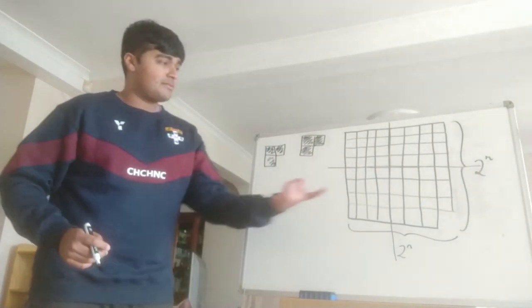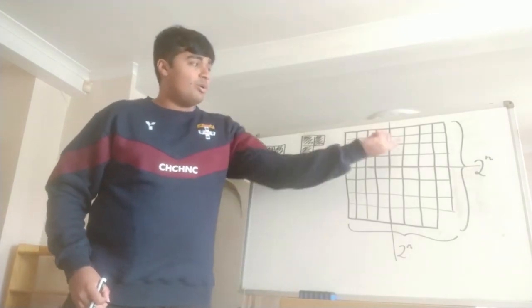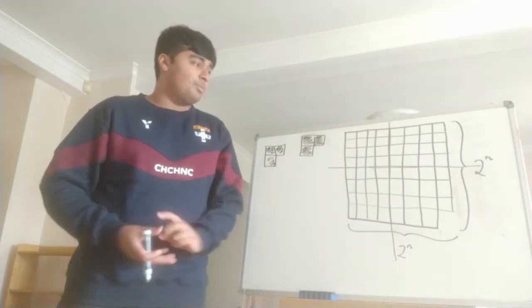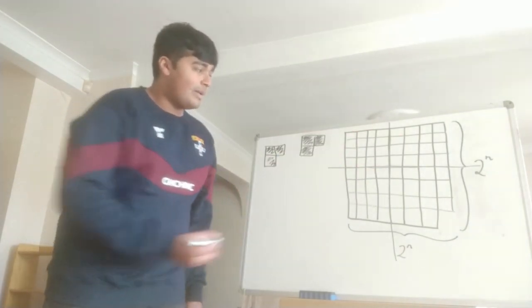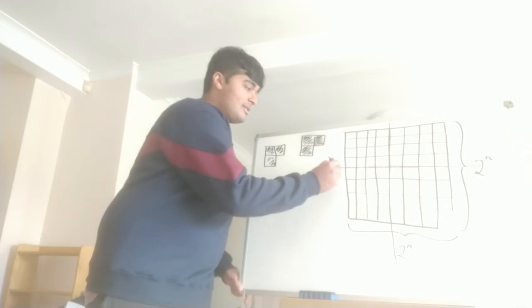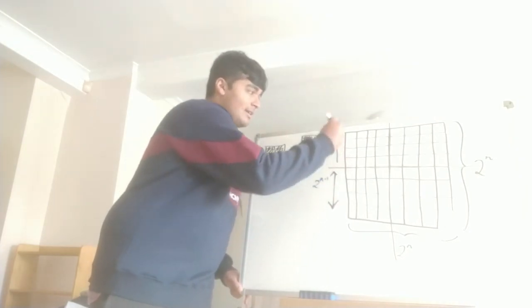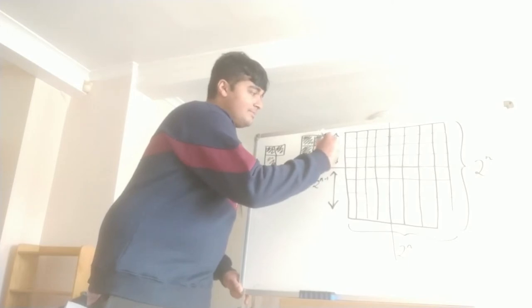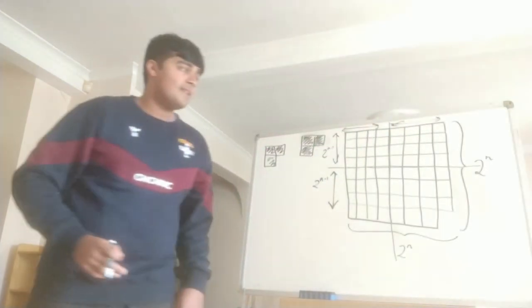Now we've split our 2^n by 2^n chessboard into four equally sized chessboards, except this one has a corner missing. What are the side lengths of each? It's just 2^n divided by 2, so 2^(n-1). This length is 2^(n-1), that length is 2^(n-1), and so on. These are all 2^(n-1).